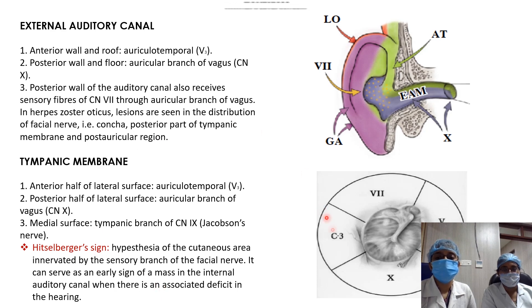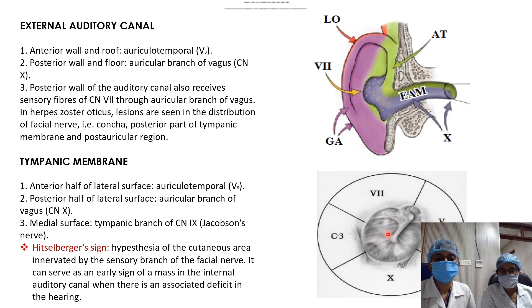Nerve supply of the tympanic membrane: the anterior half of the lateral surface is supplied by the auriculotemporal nerve. The posterior half is supplied by the auricular branch of the vagus nerve. The medial surface of the tympanic membrane, facing the middle ear, is supplied by the tympanic branch of the glossopharyngeal nerve, known as Jacobson's nerve.